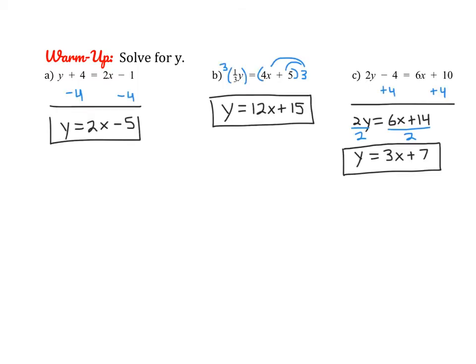Alright, go ahead and check. Remember, if we are solving for y, our goal is to isolate y. In the first problem, we can subtract 4 from each side. In the second problem, we can multiply both sides by 3 — make sure you distribute the 3 to the entire right side. On part c, first add 4 to each side; we're combining like terms and can't add it to 6x. Then divide both sides by 2, so you get 3x plus 7.